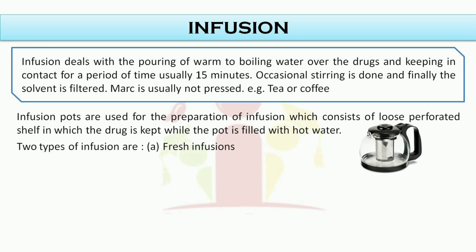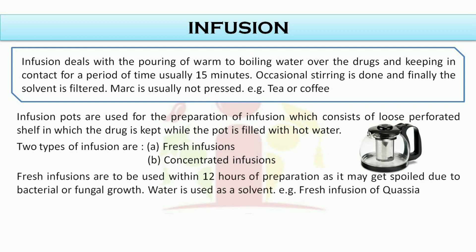There are two types of infusion: fresh infusion and concentrated infusion. Stirring is not required because water slowly circulates due to the increase in specific gravity of water near the drug. When water comes in contact with the drug, it dissolves the active constituents and becomes heavier. The heavier layers come down and their place is taken by fresh water, resulting in a slow circulation of water. Fresh infusions are to be used within 12 hours of preparation as they may get spoiled due to bacterial or fungal growth. Water is used as a solvent. A fresh example is fresh infusion of Quassia.